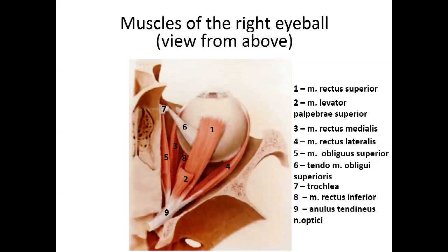Number six, the same musculus obliquus superior shown again with its tendon. Number seven is the trochlea — the structure because of which we call the innervating nerve nervus trochlearis. Number eight is musculus rectus inferior. Number nine is annulus tendineus nervi optici, from which all the depicted muscles originate. Number ten is the place of starting of musculus obliquus inferior, though the muscle itself is hidden after the eyeball. It's a very difficult and complicated theme, but very interesting. I wish you understand all these pictures in detail and be able to draw them by heart. Thank you.